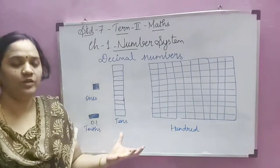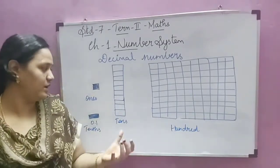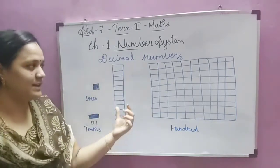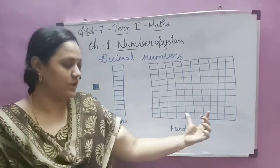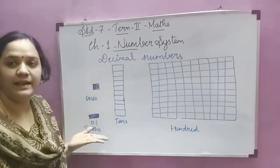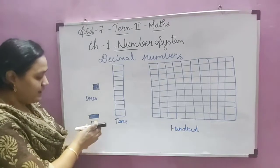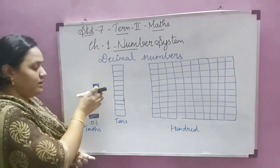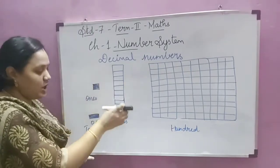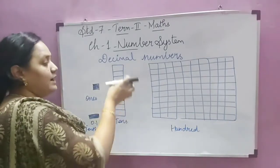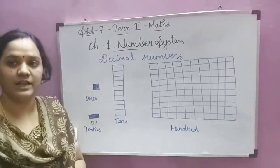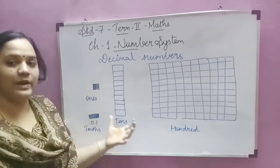We can denote place value using pictures — pictorial representation. We usually call one box as ones. Ten boxes is tens, and ten tens boxes together form hundreds. For decimal numbers, a slide represents the tenths part. Ten slides form one ones box. Ten ones boxes join to form the tens box, and ten tens boxes join to form the hundreds box.